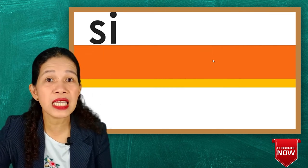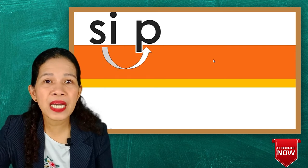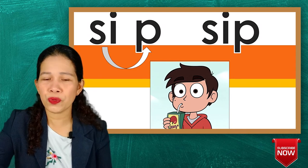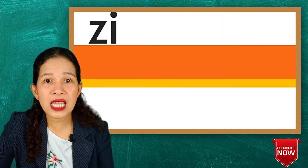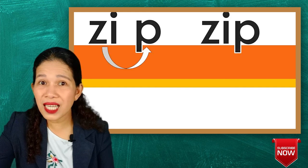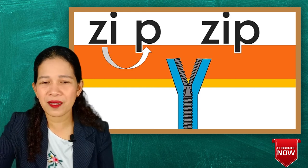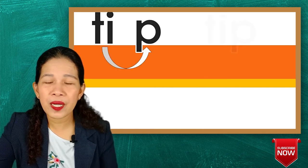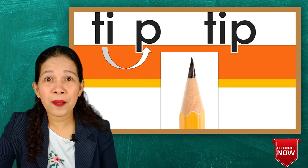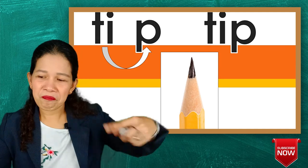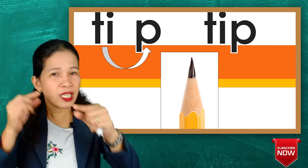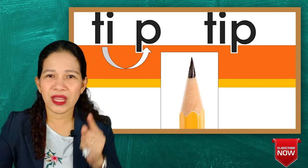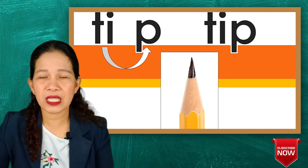Next is sip. Look at that boy sipping his juice. Next is zip — that's a zipper, you zip it. Okay, next is tip. The picture shows the tip of a pencil, the tip of your finger, or the tip of your hair. That's what you call tip — the end or last part, the top part of a thing.